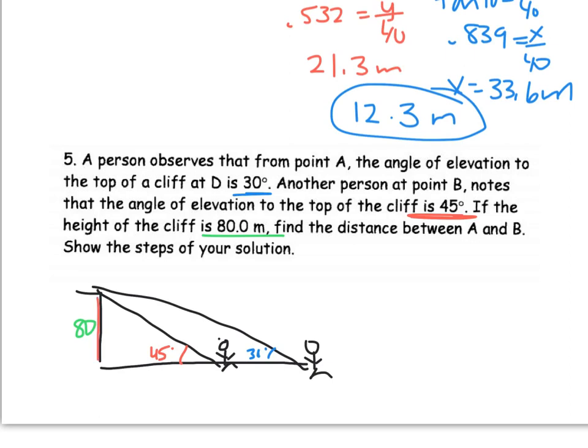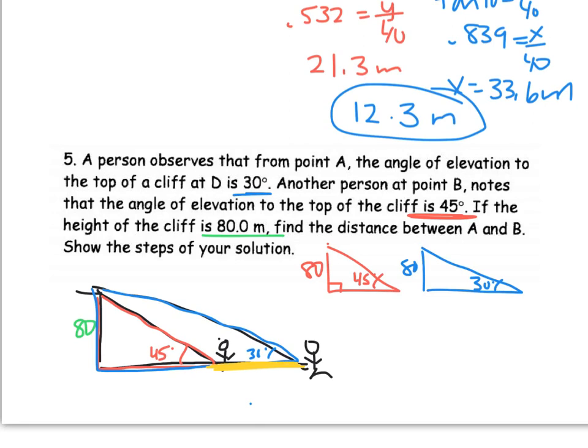And maybe you can see my two triangles. Here's my first triangle. 80, 45, and then my bigger triangle would be 80 and 30 degrees. And this one wants to know what's the distance between A and B. What's the difference, distance, between these two people. So what we're going to do is do our big length, I'll call it x, minus our small length, I'll call y. So another problem involving subtraction.